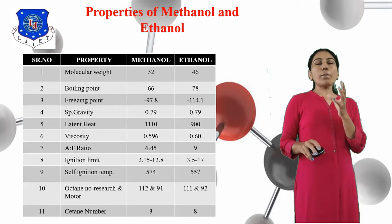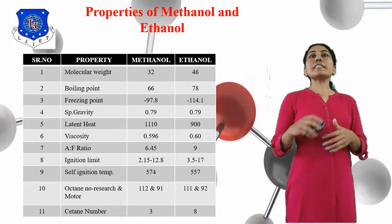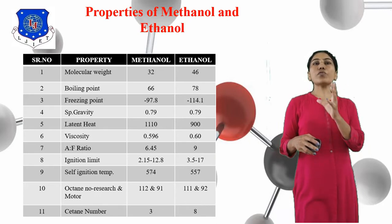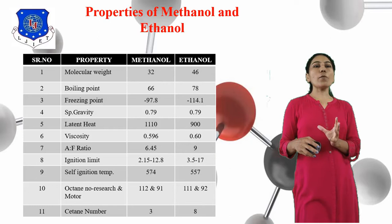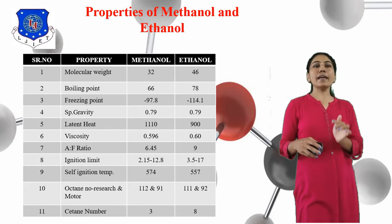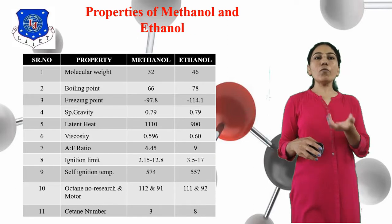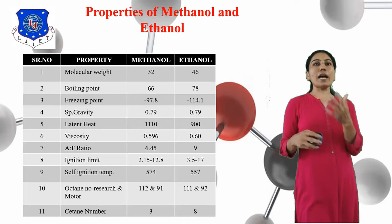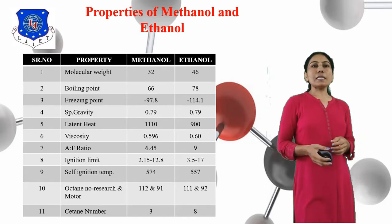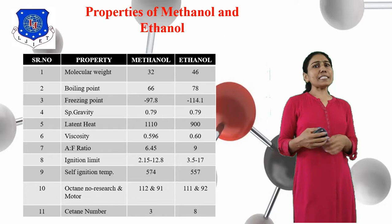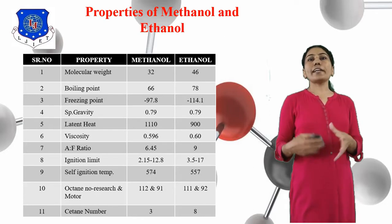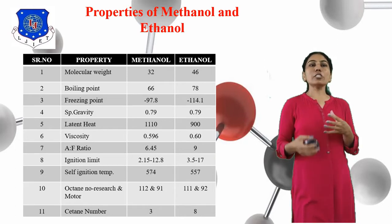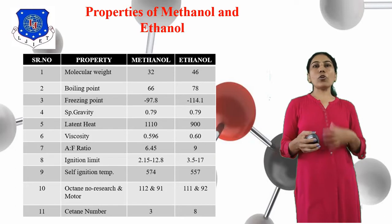Freezing point is the temperature at which liquid converts to solid form. The freezing point of Methanol is minus 97.8 and Ethanol is minus 114.1. Specific gravity means the density of the material relative to the density of water at a given temperature. The specific gravity is the same for both Methanol and Ethanol at 0.79.